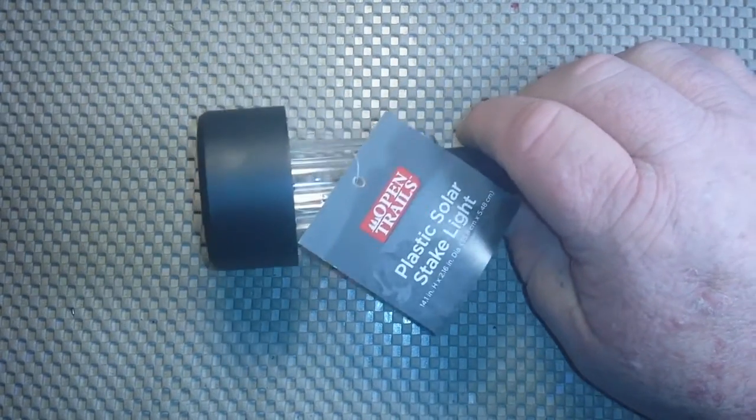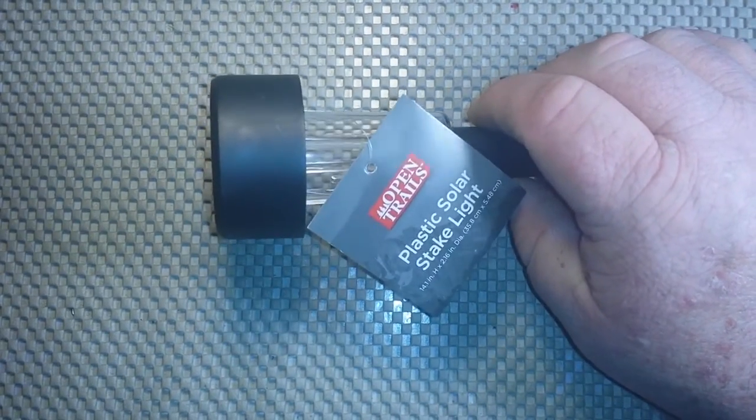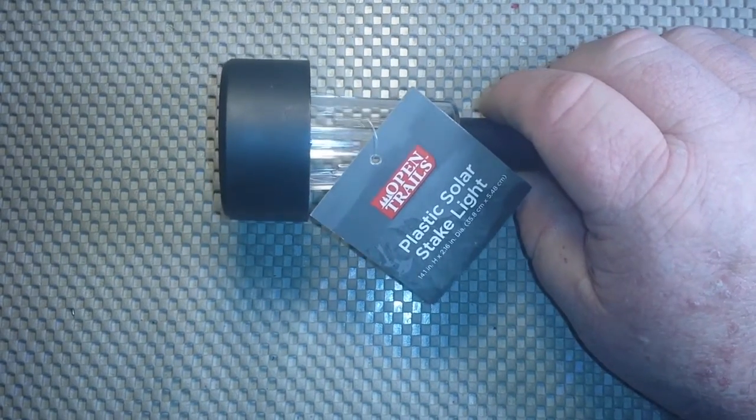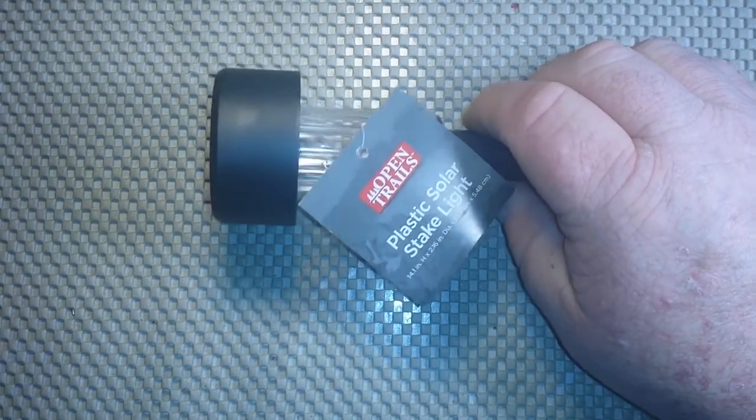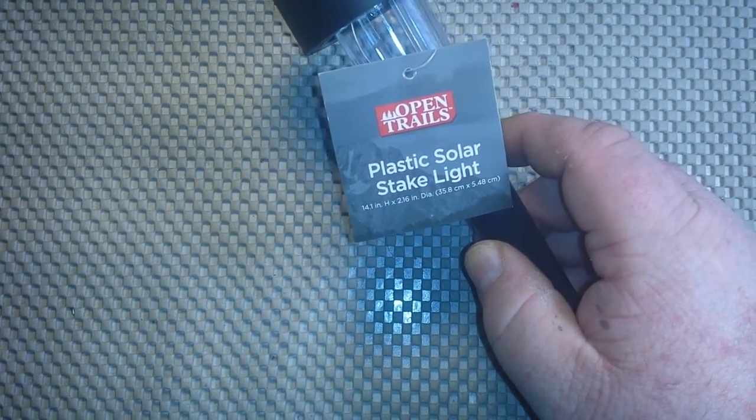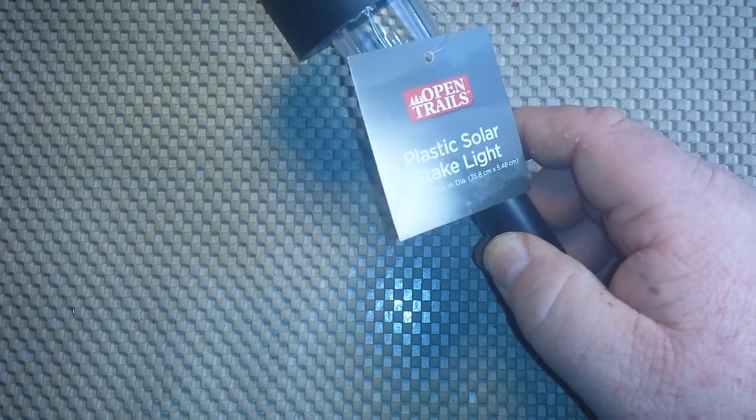Well, there's a Dollar General right around the corner from my house. And in their hardware aisle, they sell these ones, the Open Trail Plastic Solar Steaklight, for a dollar all year long.